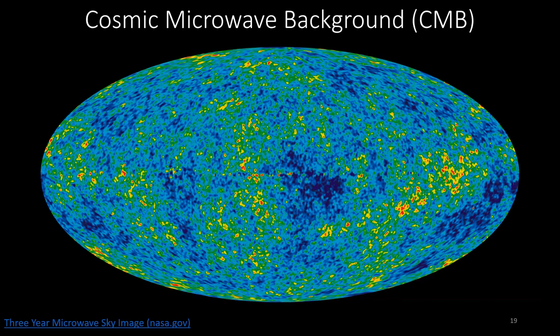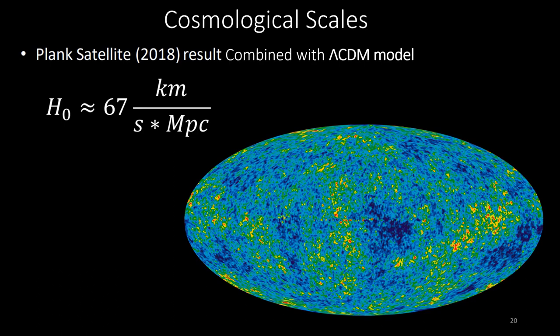On cosmological scales, looking back at the early universe, we can infer the Hubble constant by looking out at the edge of our observable universe. This 13.8 billion year old light reaching us today forms the cosmic microwave background — the leftover light and radiation released shortly after the birth of the cosmos. By identifying anisotropies in the temperature and polarization of this light, the Planck collaboration has produced the most accurate CMB measurements to date. However, in combination with our Lambda CDM model, these measurements predict a Hubble constant of nearly 67 km/s/Mpc — conflicting with direct local measurements from the cosmic distance ladder.